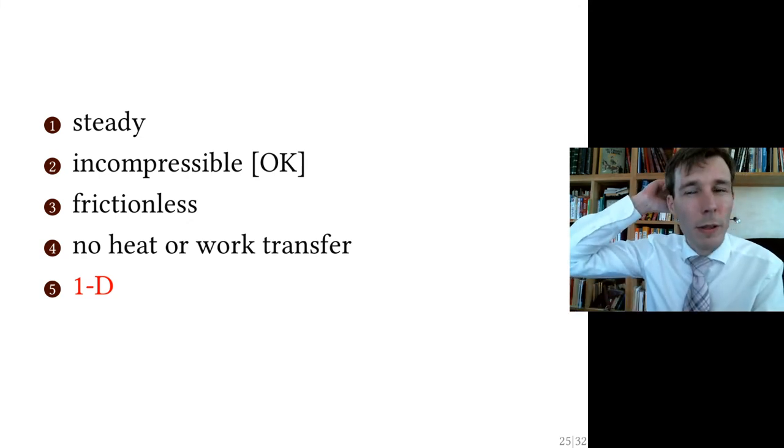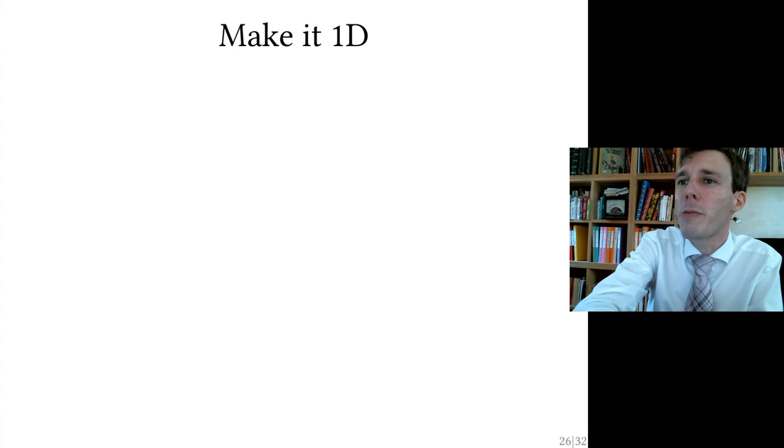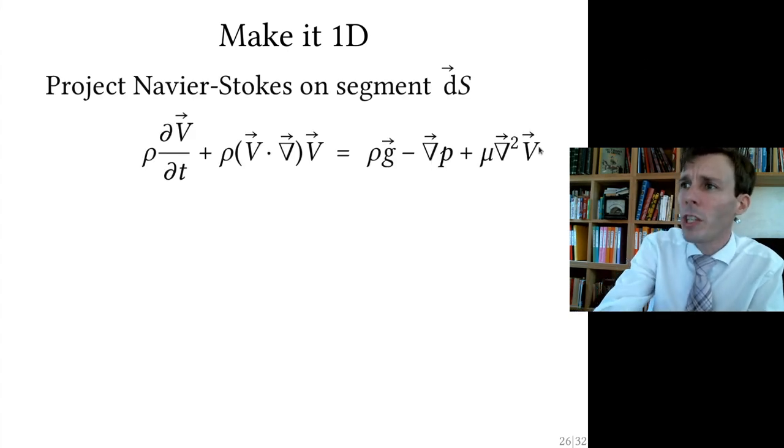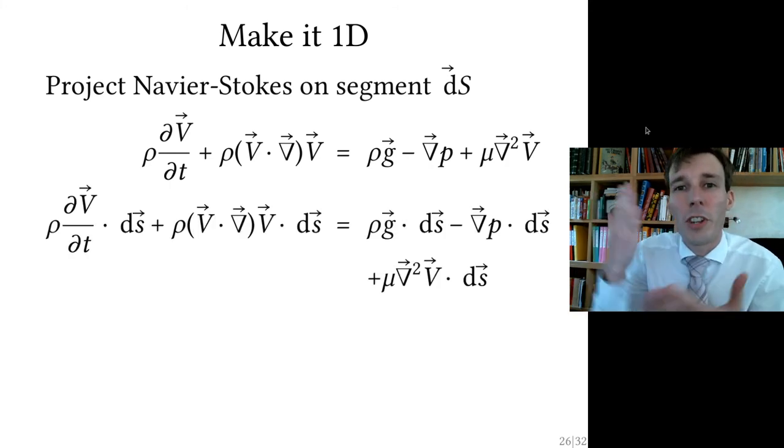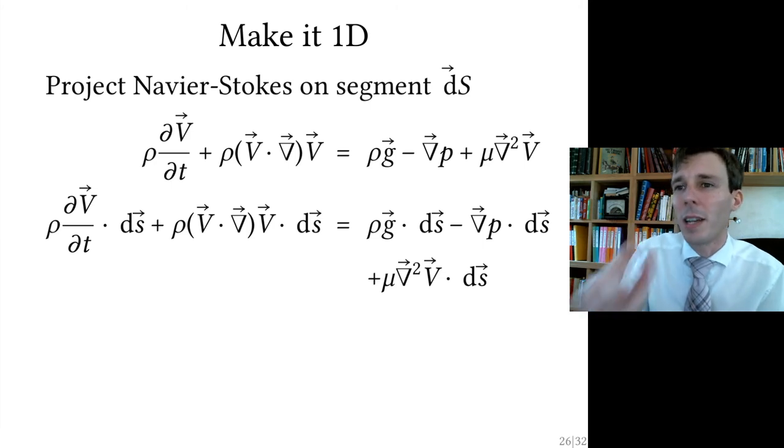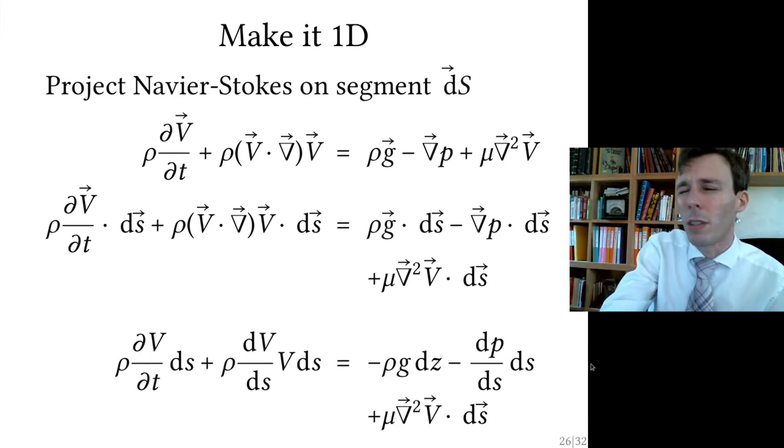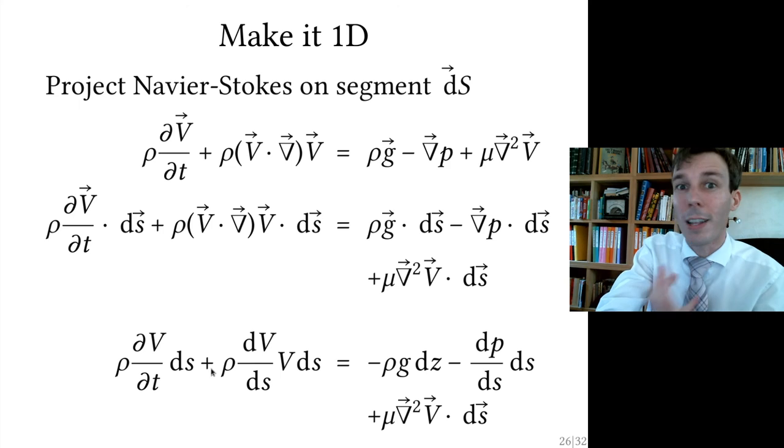So let's start with, you remember now, there are five conditions for the Bernoulli equation. Let's start with the last one first and put it in one dimension. So we take the three-dimensional Navier-Stokes equation, which is here, the complete three-dimensional Navier-Stokes equation. You take this equation and project it onto a tiny bit of element DS. We take the dot product of this vector with a tiny bit of element DS. Every bit here, we take a dot product with DS, so that we have just scalars. We can remove all the vectors and get this.